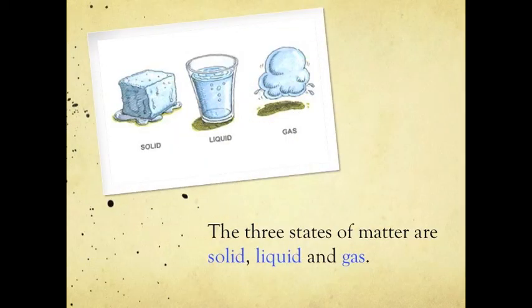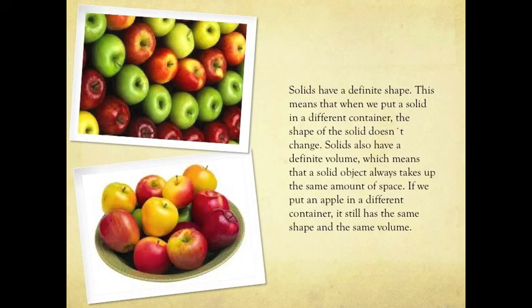The three states of matter are solid, liquid, and gas. Solids have a definite shape. This means that when we put a solid in a different container, the shape of the solid doesn't change. Solids also have a definite volume, which means that a solid object always takes up the same amount of space. If we put an apple in a different container, it still has the same shape and the same volume.